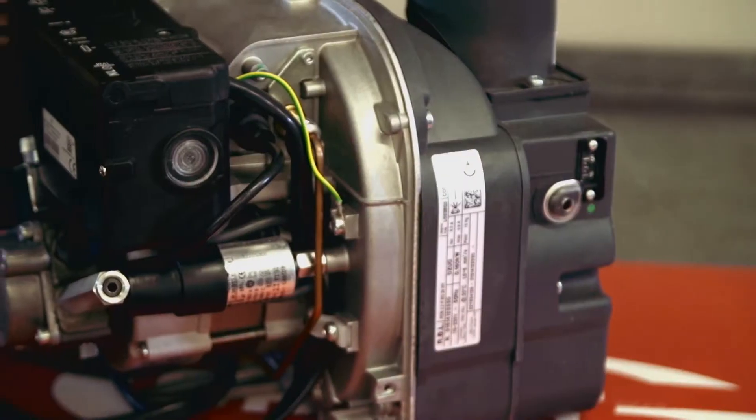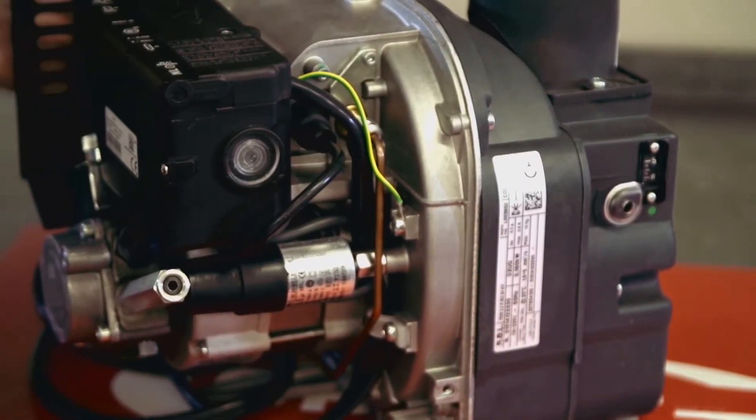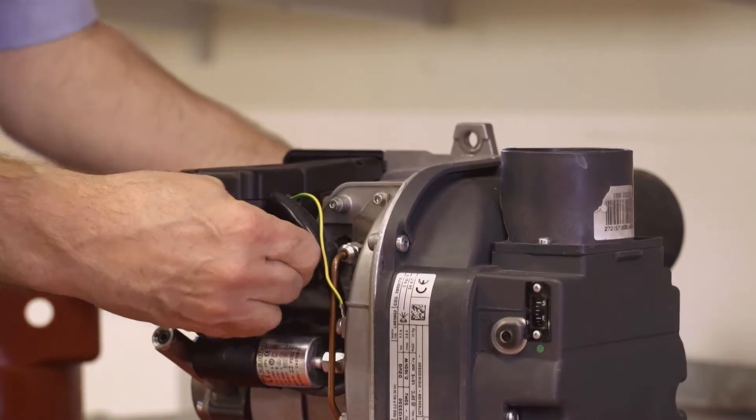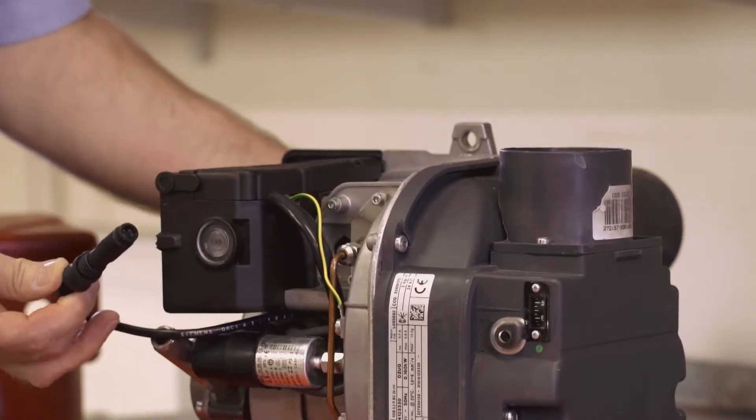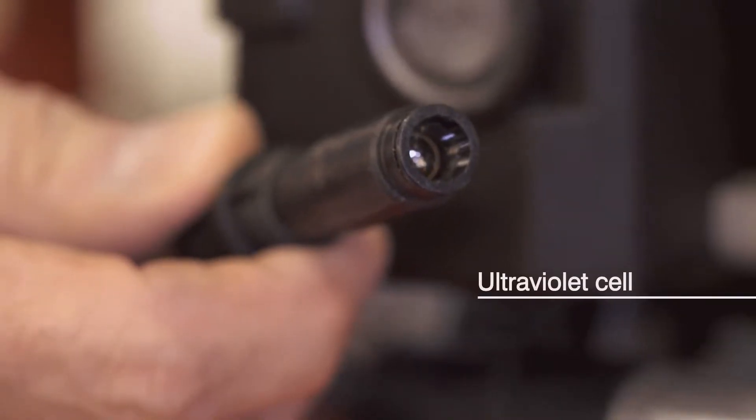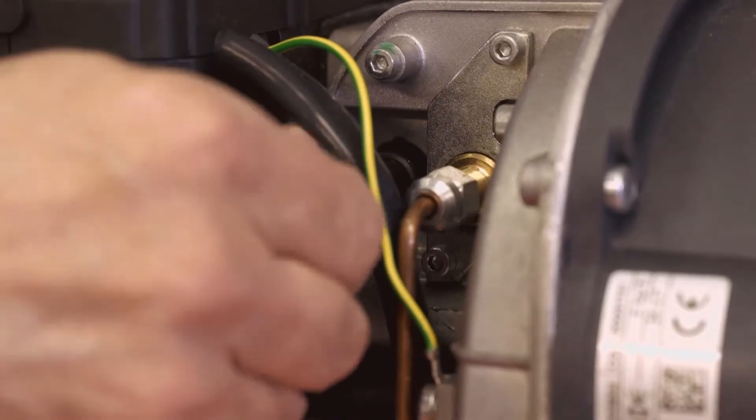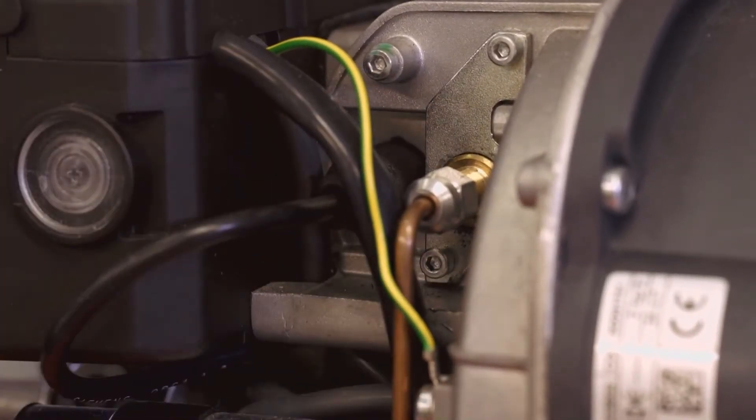The photo cell is in the same position but this burner uses an ultraviolet or UV cell instead of the photoresistor more commonly used. This is used because the blue flame on this burner can't be seen by the usual photo cell.